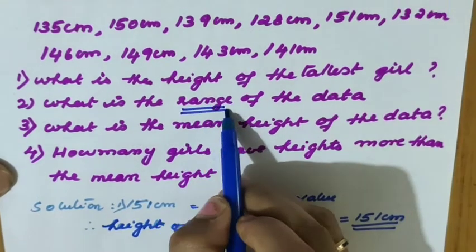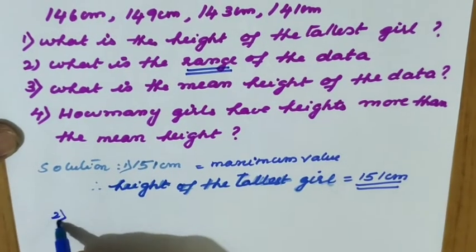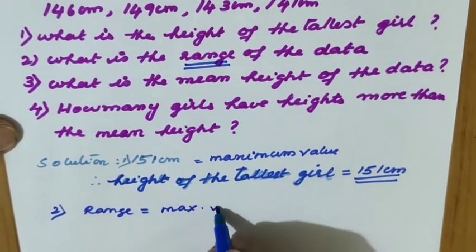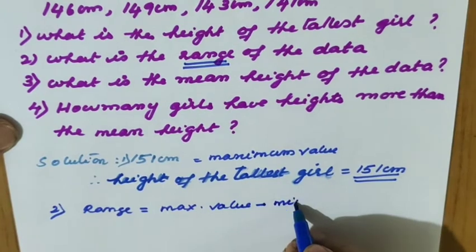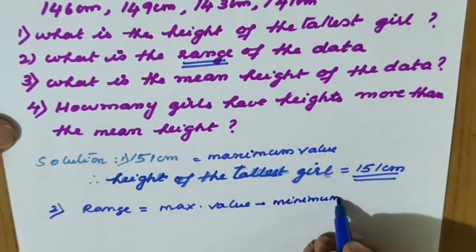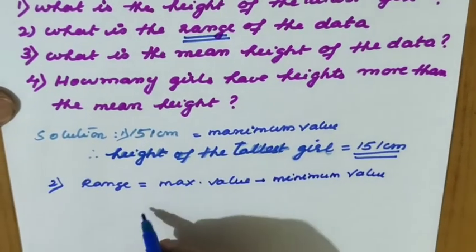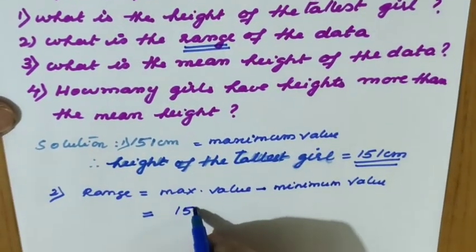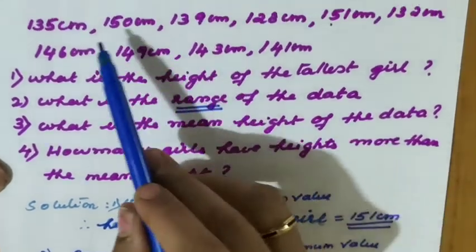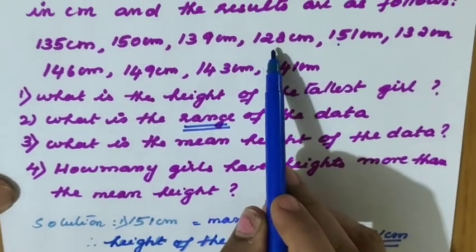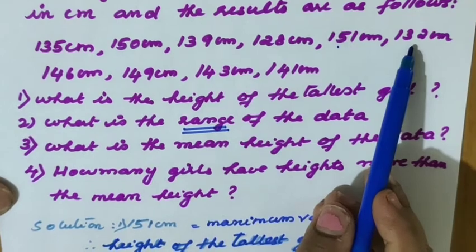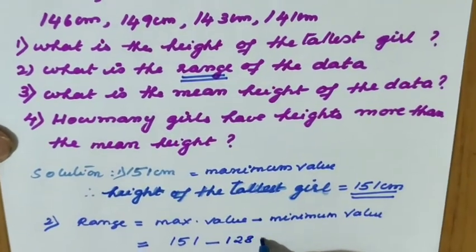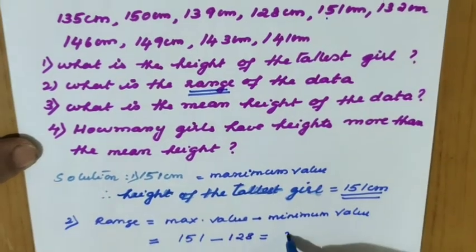What is the range of the data? Range equals maximum value minus minimum value. The maximum value is 151. The minimum value — checking 135, 139, 128, 132, 141 — 128 is the least. So 151 minus 128 equals 23 cm. That is the range.